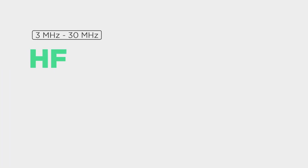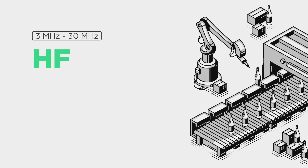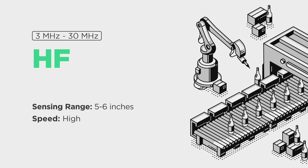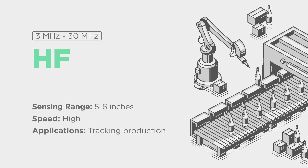Moving up to high frequency, we have the added benefit of processing and storing larger amounts of data in comparison to low frequency. With high frequency we typically see sensing ranges around five to six inches. Along with the added range, high frequency passes and moves data much quicker than low frequency, meaning it is much more fit for faster moving processes. Here at Neff we typically see people using high frequency for tracking and tracing workpieces through production.